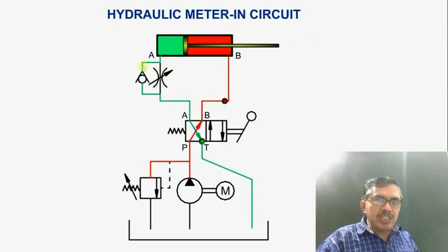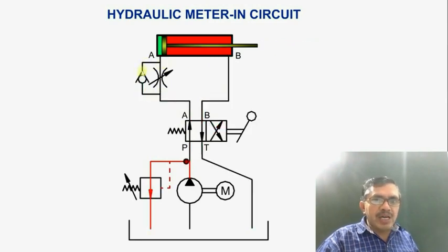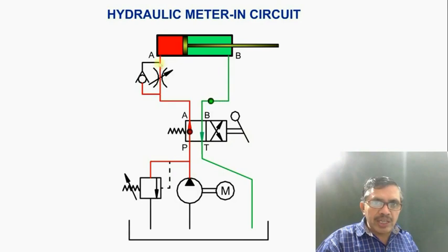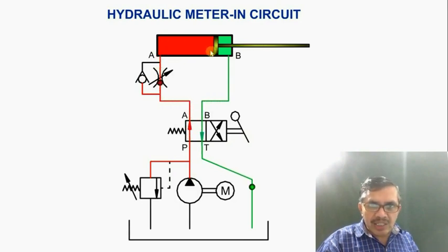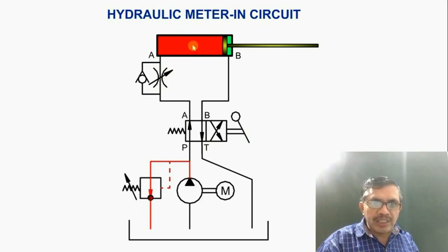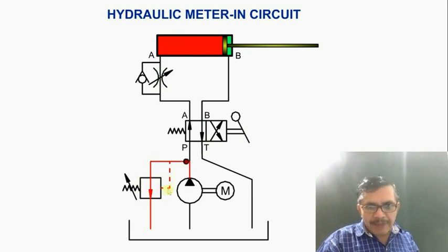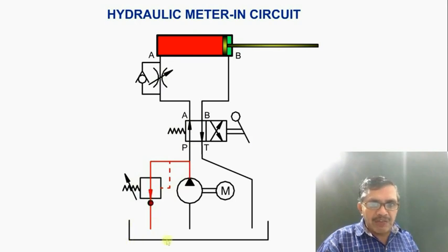During retraction, oil flows through the check valve, which is uncontrolled flow, and hence the cylinder retracts with higher speed. During extension, oil flows into the cylinder, and once the extension completes, no more oil can flow in. That is why the pressure relief valve opens and oil flows back to the tank through the pressure relief valve.